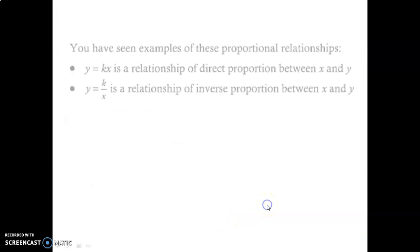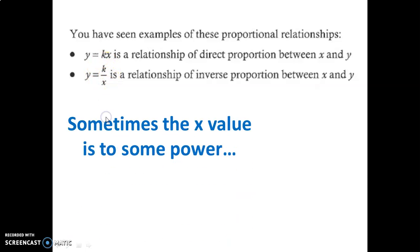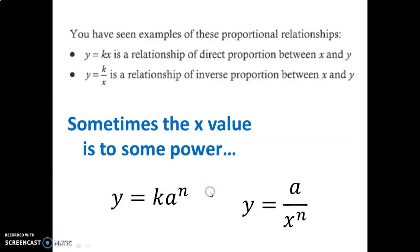So we've seen examples of proportional relationships — we've seen direct variation or direct proportion, and we've seen inverse proportion. Now, you should know that sometimes the x value is to some power. For example, this basic direct proportion can be written where a is to some power, or often also in the inverse proportion, that x is also to some power. This is common — it happens often. Let's take a look at something like this.